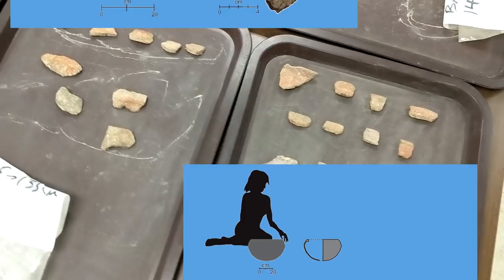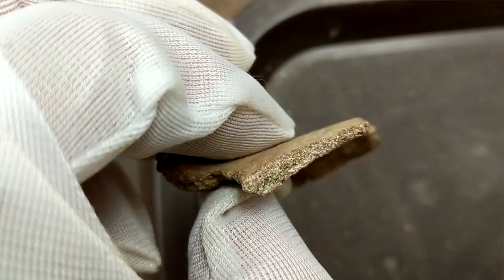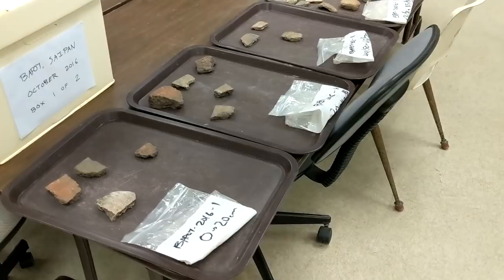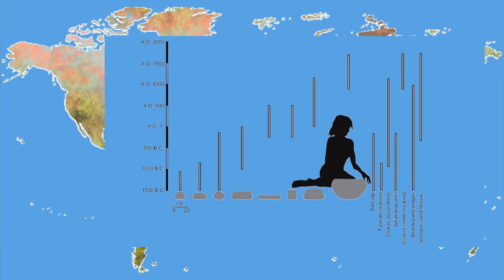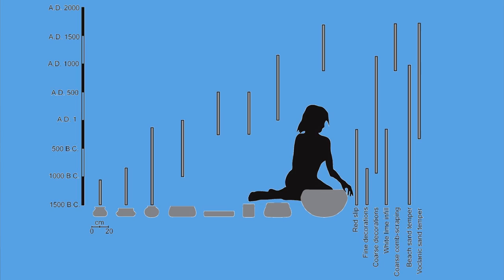In each potsherd, you can examine the raw materials, thickness, manufacturing technique, decorative expressions, and other individual attributes. All of those observations work toward defining the larger pottery tradition, and then you should be able to specify the geographic area and the time period of the tradition that you are describing. This approach provides the most essential factual framework for all further research questions about the artifacts that you are studying.